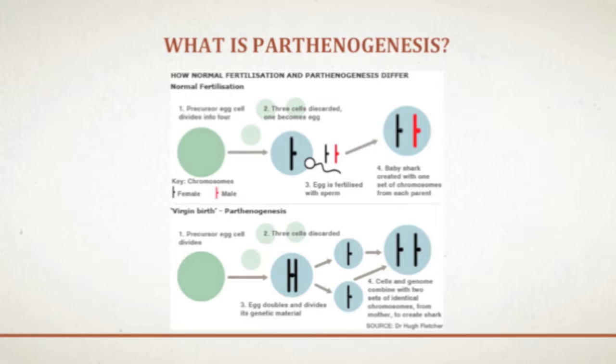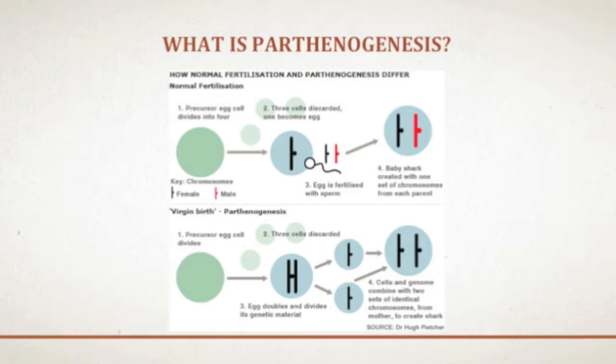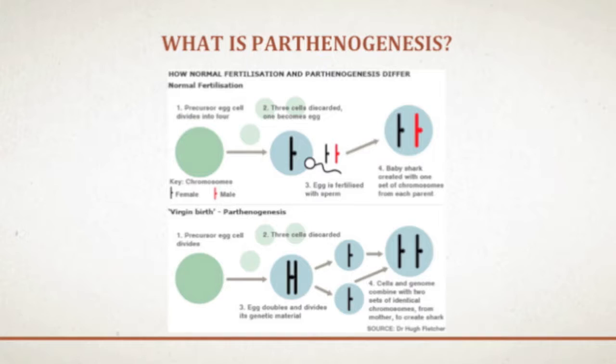Obligate parthenogenesis is the most extreme form, in which the organism is exclusively reproduced through asexual means. Organisms that are obligate parthenogens are thought to have transitioned into this form from other forms of reproduction. These species largely use an apomitotic form of reproduction in which offspring develop directly from mitotic divisions of unreduced ova, and the female will produce an ovum with a full set of genes provided solely by the mother.